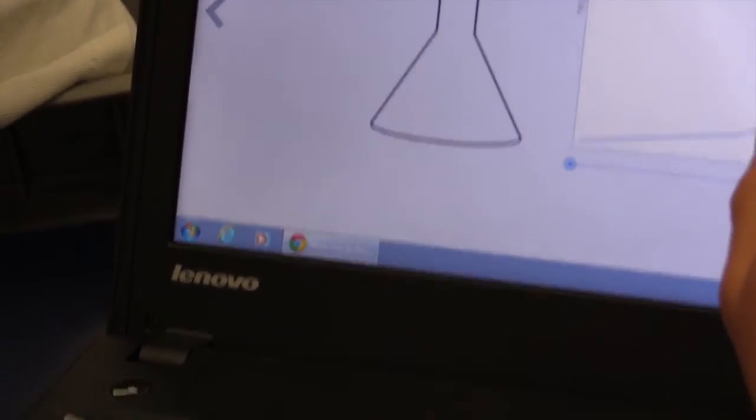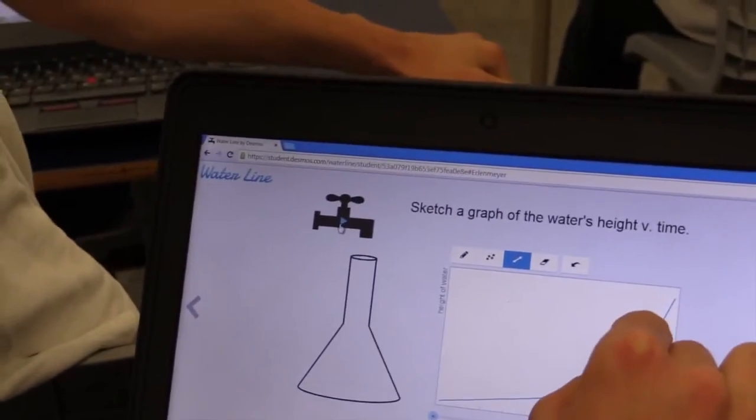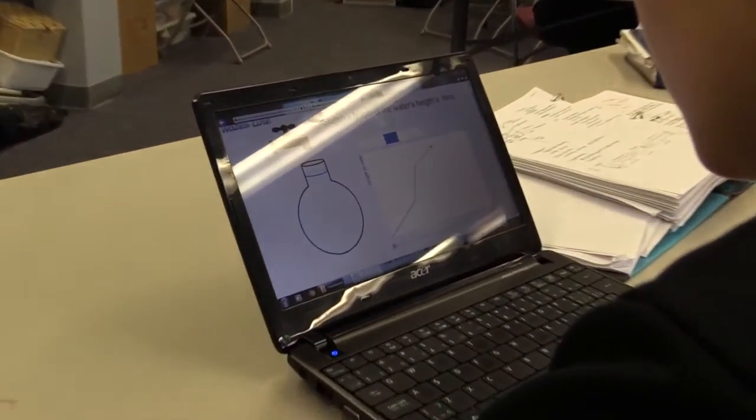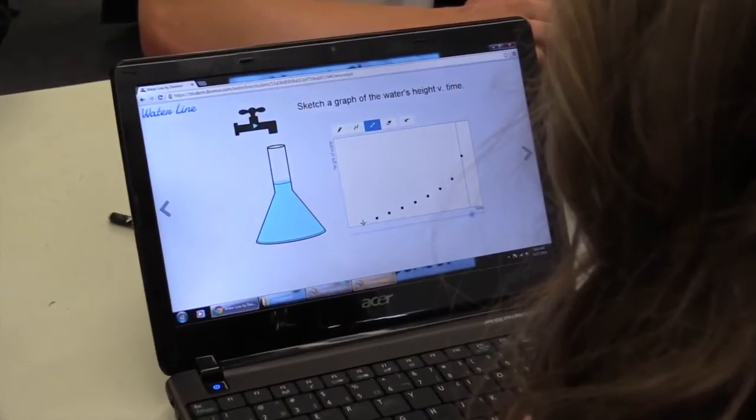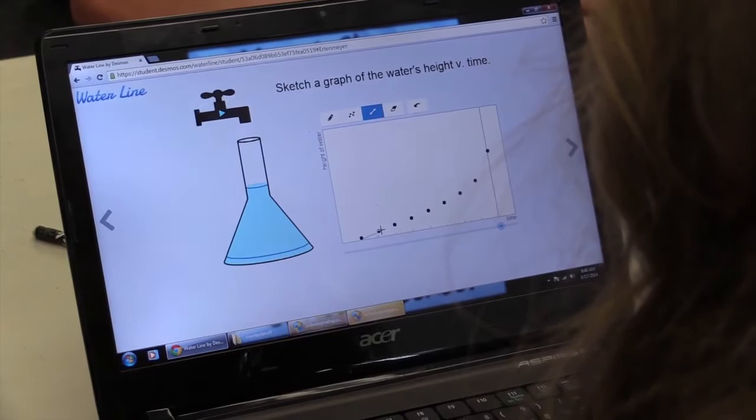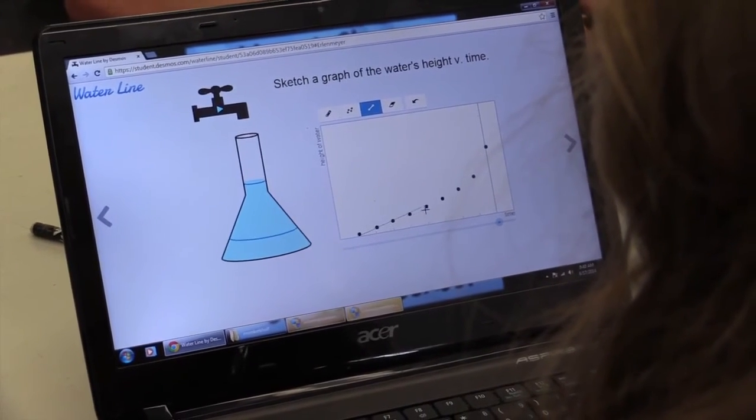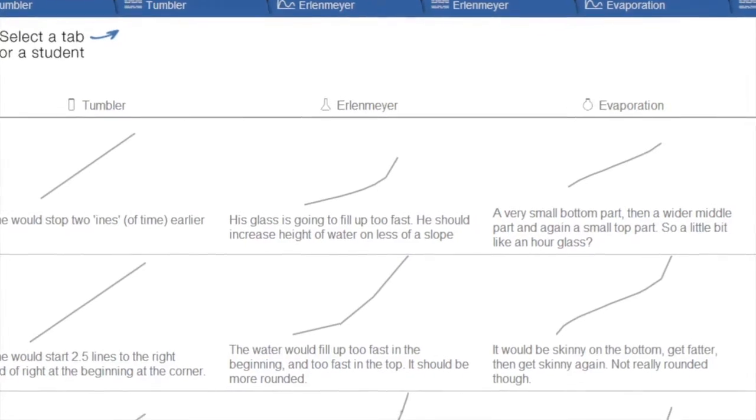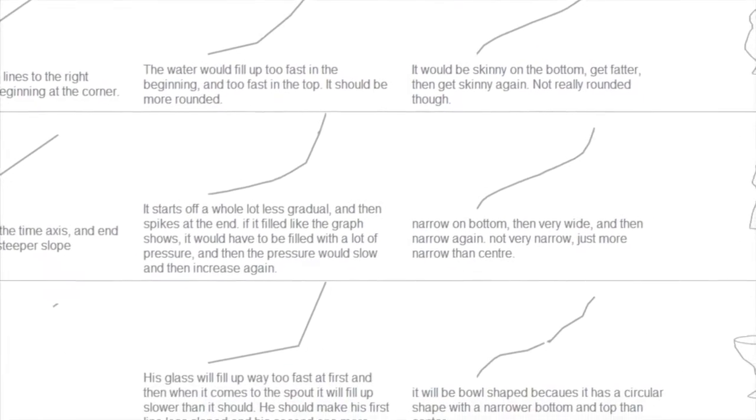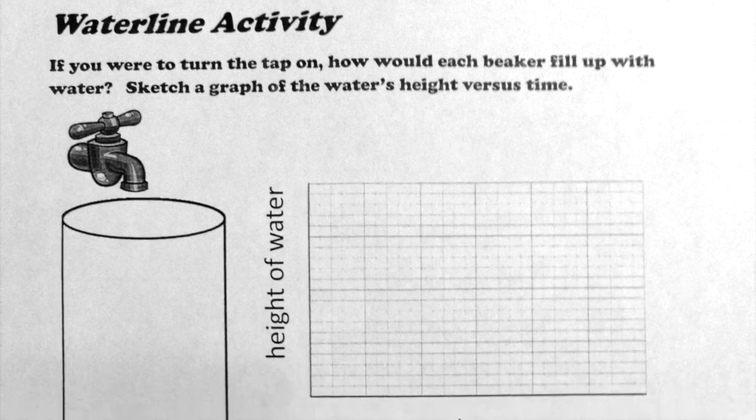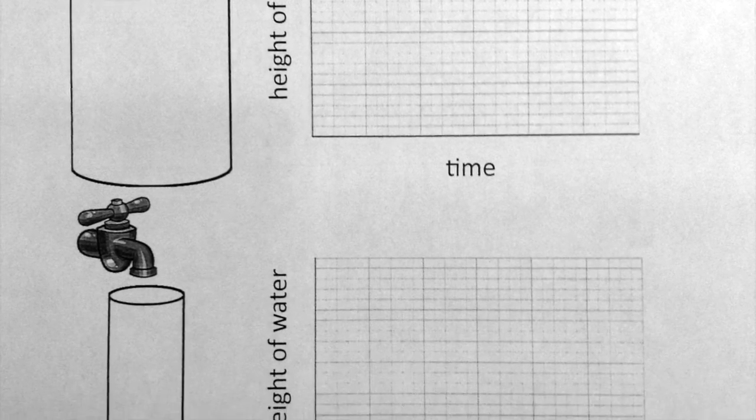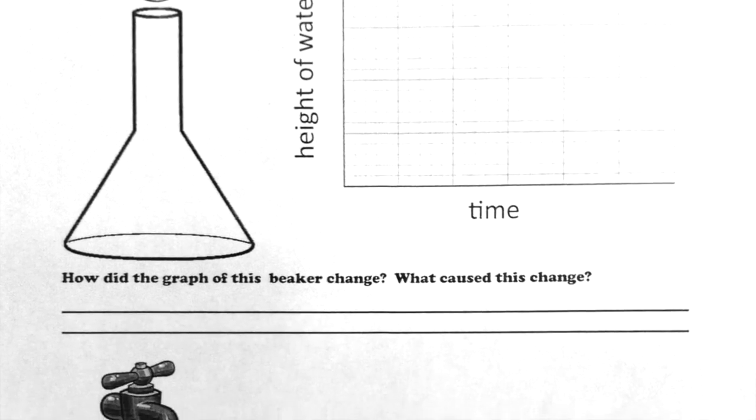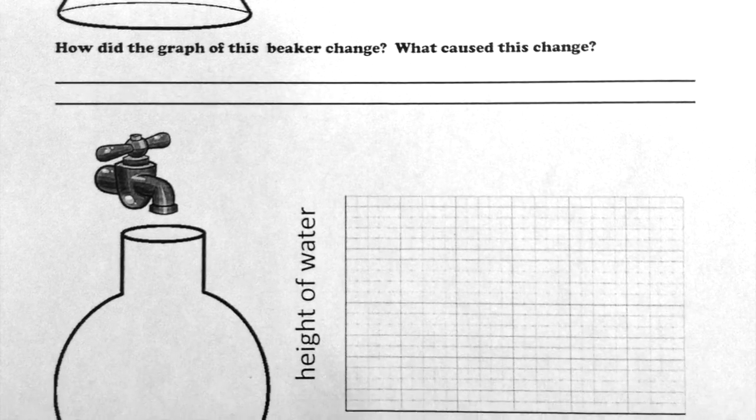Several students made comments like, as the beaker gets narrower, the water goes up faster, or the graph gets steeper. It seems that this task really helps students have a deeper, more dynamic understanding of the mathematics involved. I tried this activity in class as well, however, I did not use Desmos. Instead, I gave students a worksheet with diagrams of the various beakers beside blank height versus time graphs. Students were asked to visualize the process of filling a beaker and sketch the graphs.